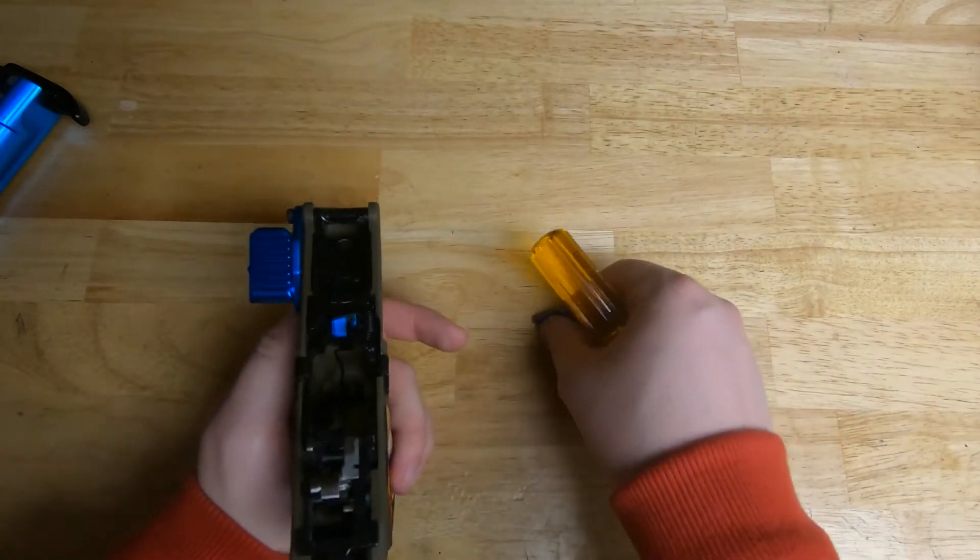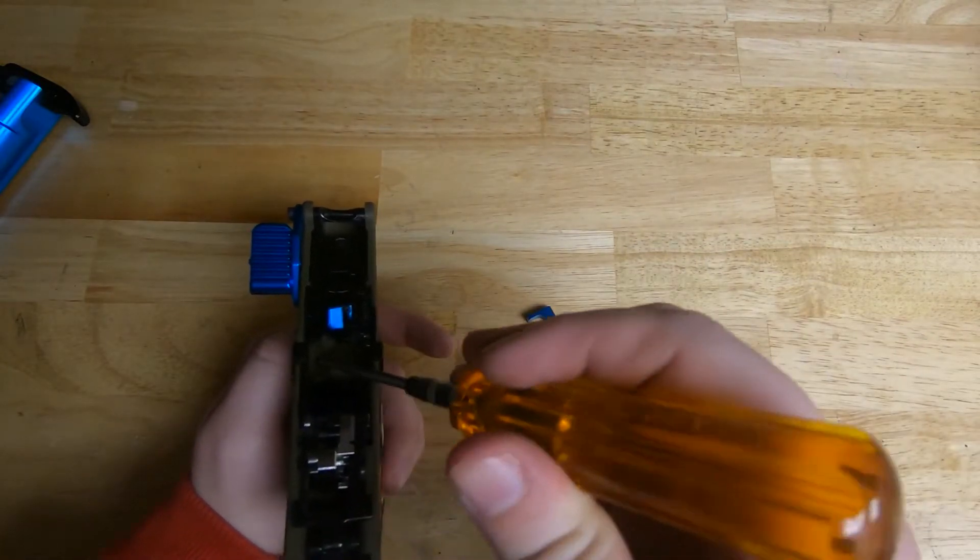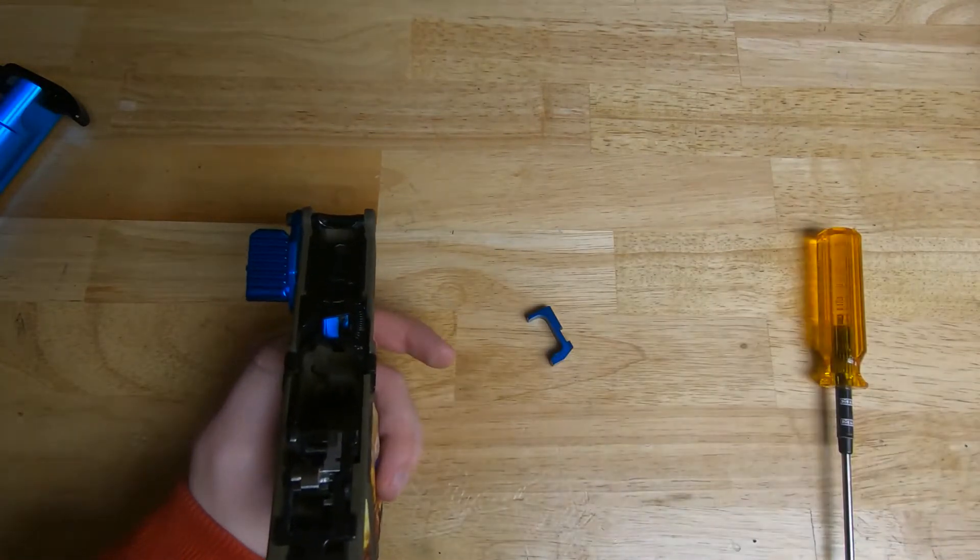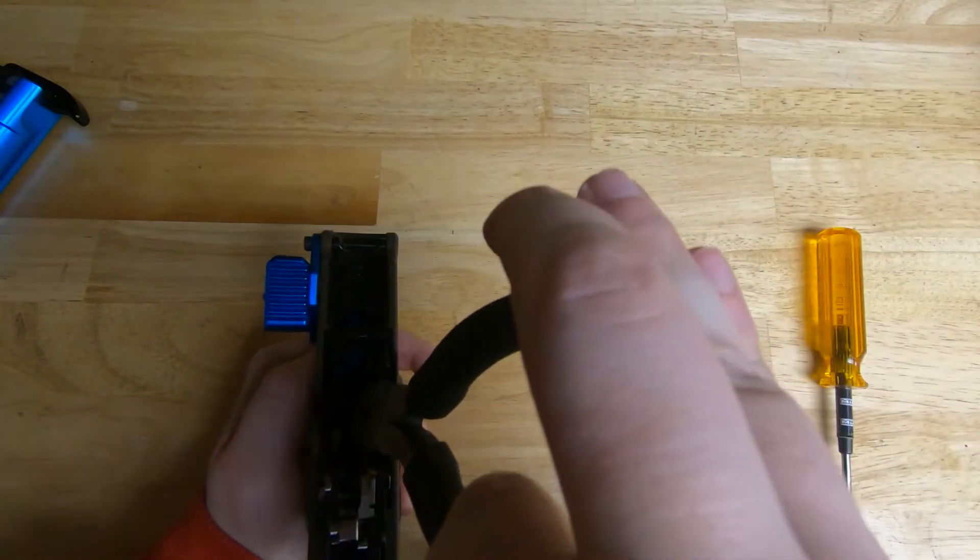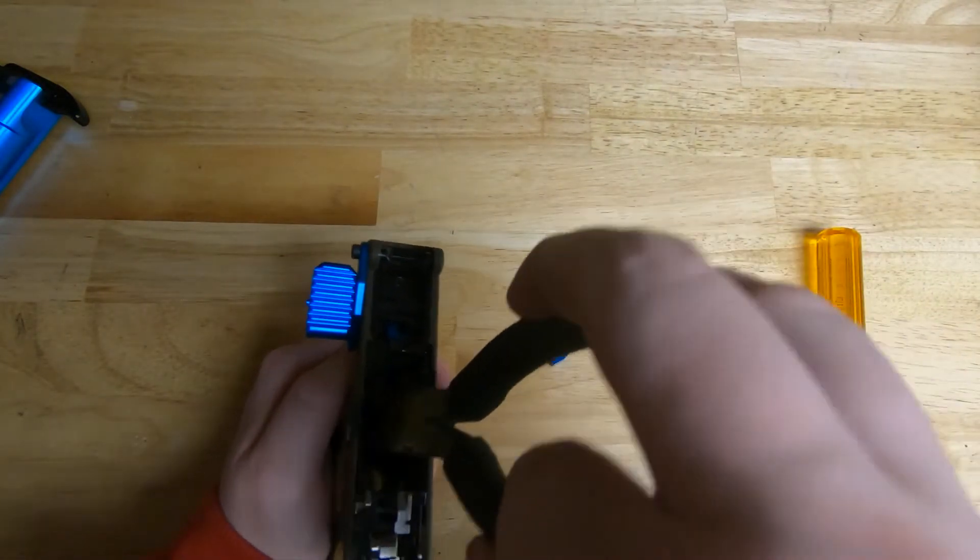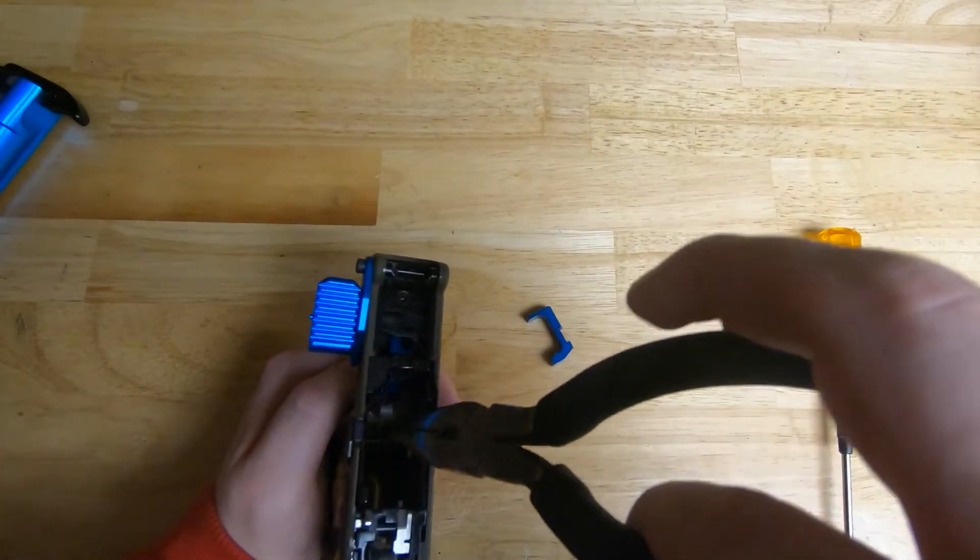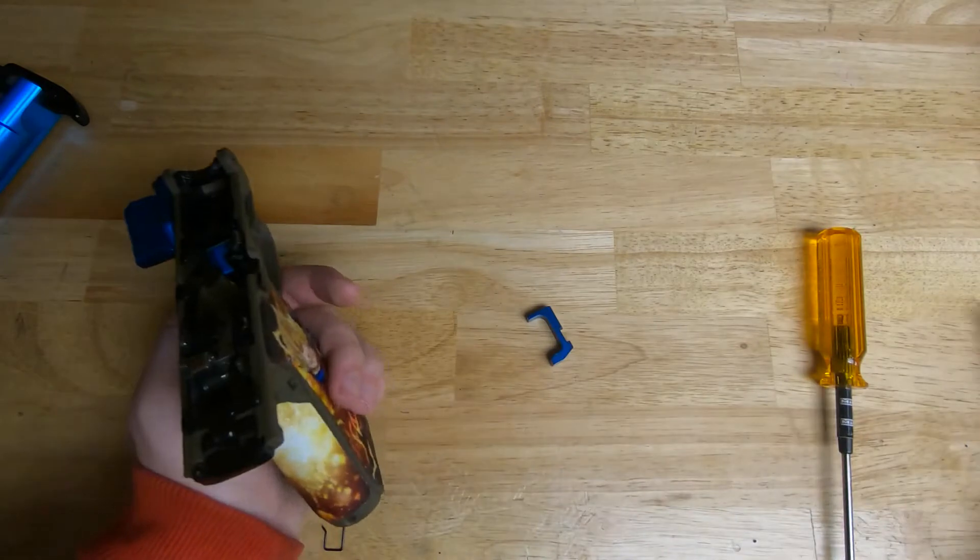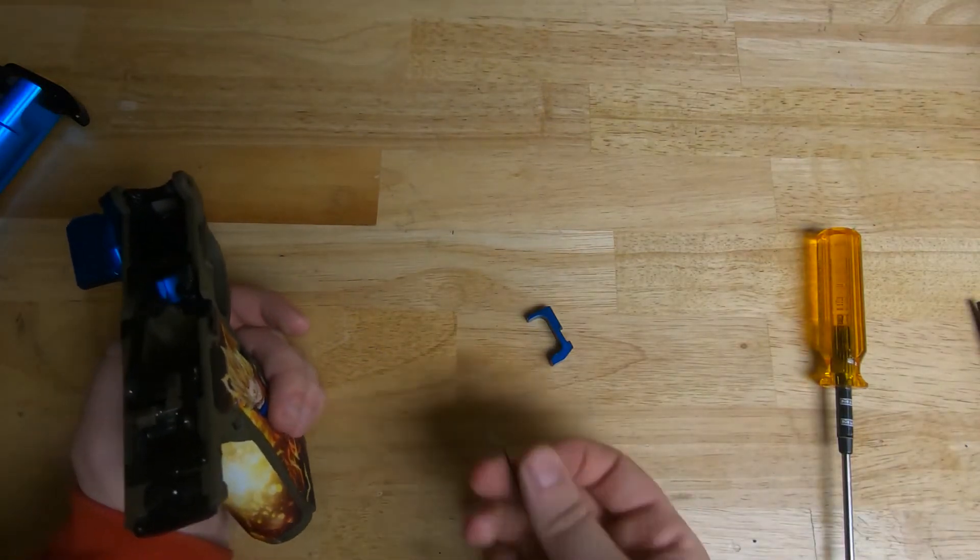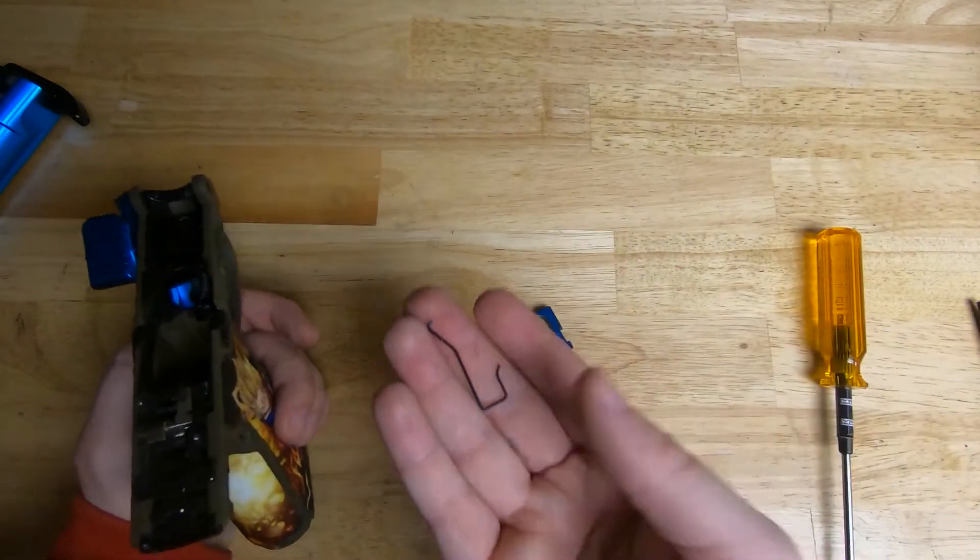For grabbing the spring out, I'm going to want some pliers. Just grab the spring and just pull it. It'll come out. Sometimes it's a little bit stubborn. Try not to lose these. These are very small springs.